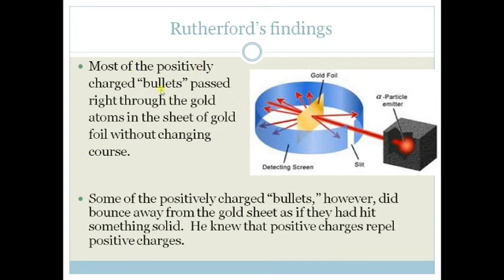Most of the positively charged bullets passed right through. He called them bullets, but they are alpha particles. And most of the positively charged bullets passed right through the gold atom in the sheet of gold foil, without changing course, and it didn't make a hole. Some of the positively charged bullets, however, did bounce away from the gold sheet, as if they had hit something solid, and he knew that positive charges repel positive charges. So that gave him a hint.